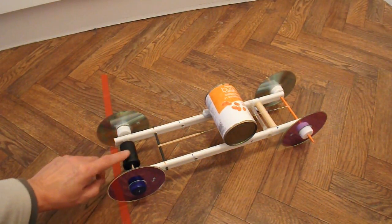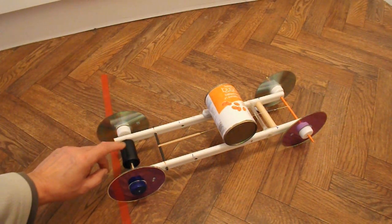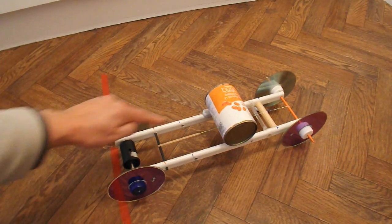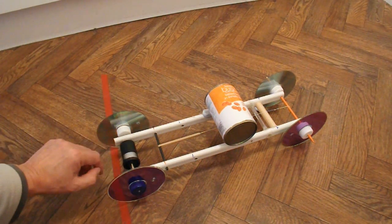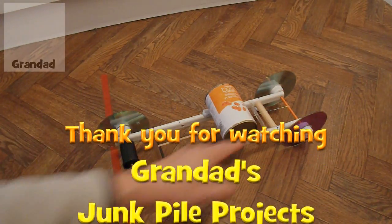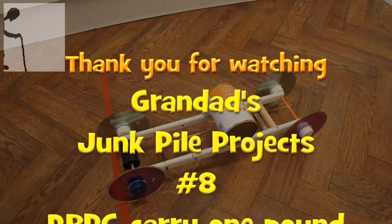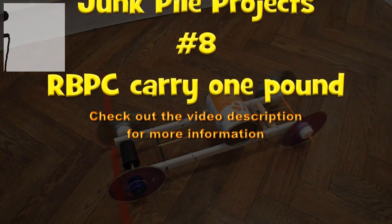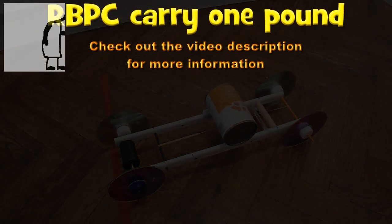This thing we don't use either. In rubber band powered car number one we use that. Because the rubber band starts at that end, goes round over that as a pulley, and back to the back axle. So you get twice as much rubber band on it as you would normally get in the same size car. That's it. Job done.